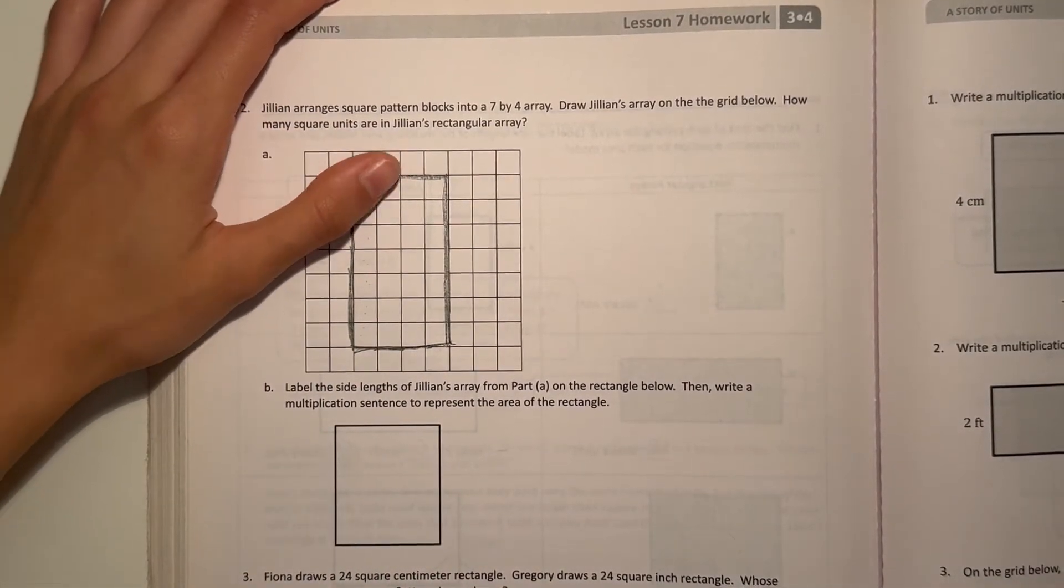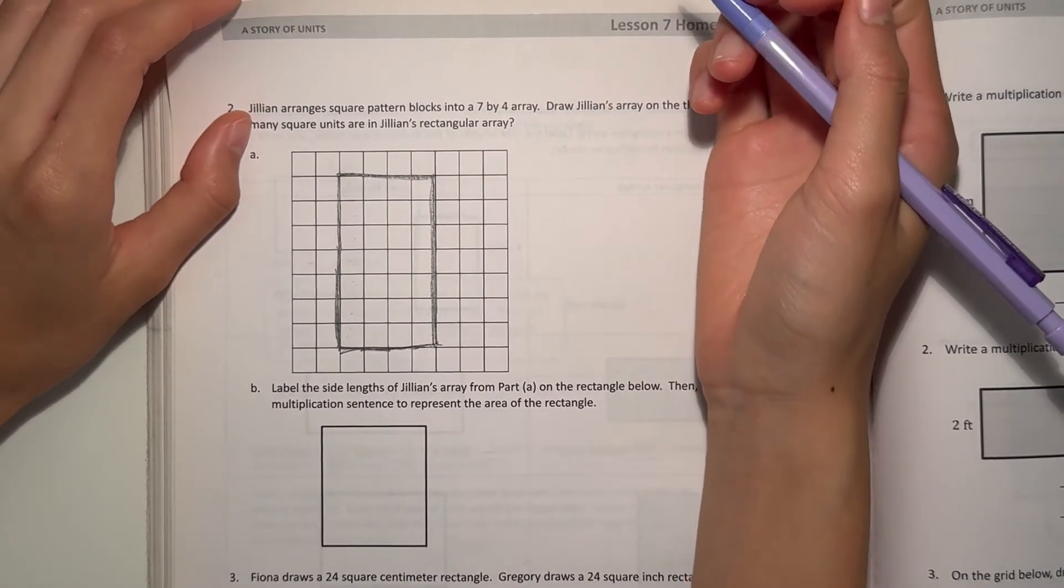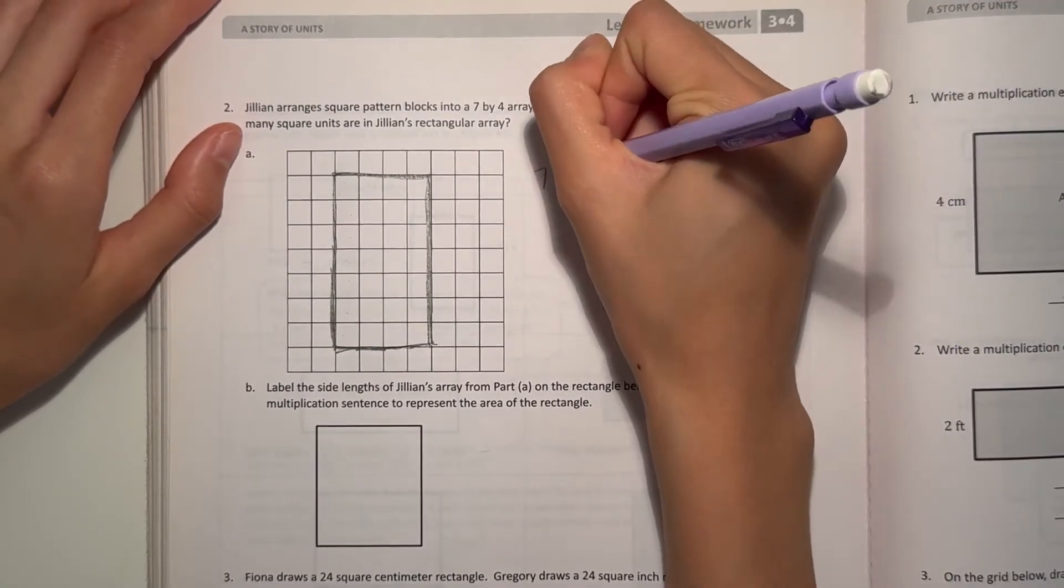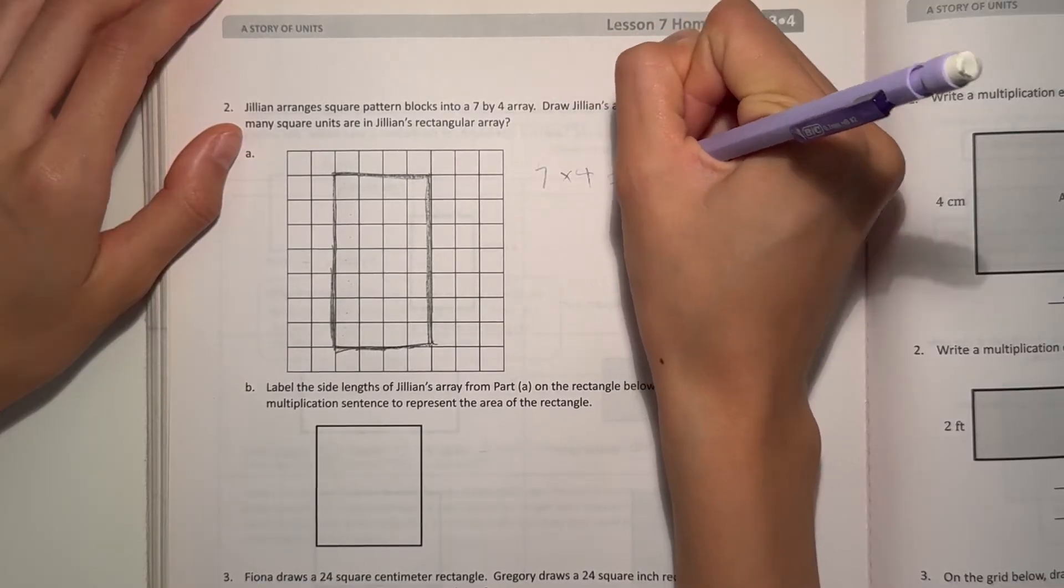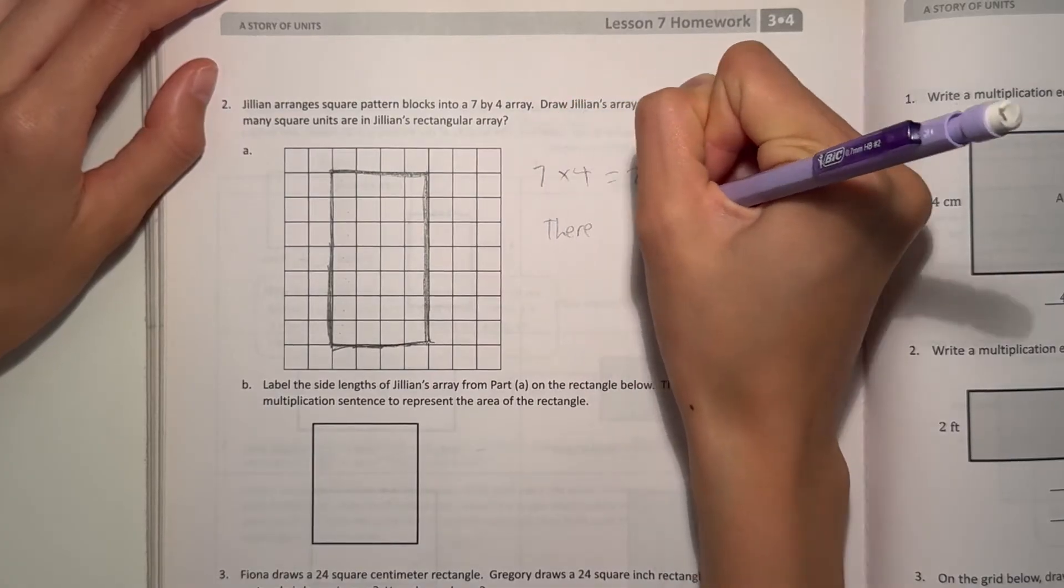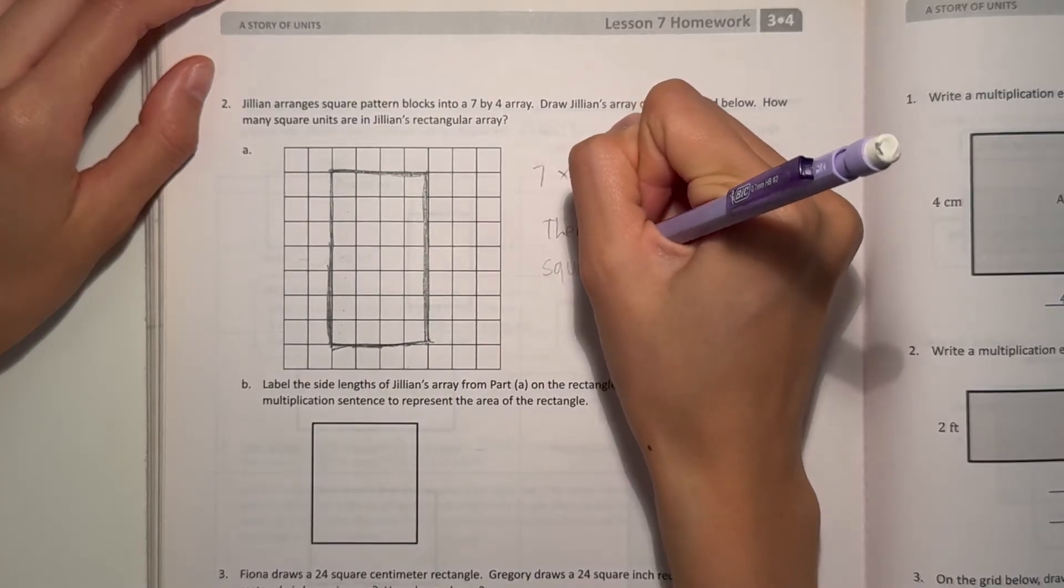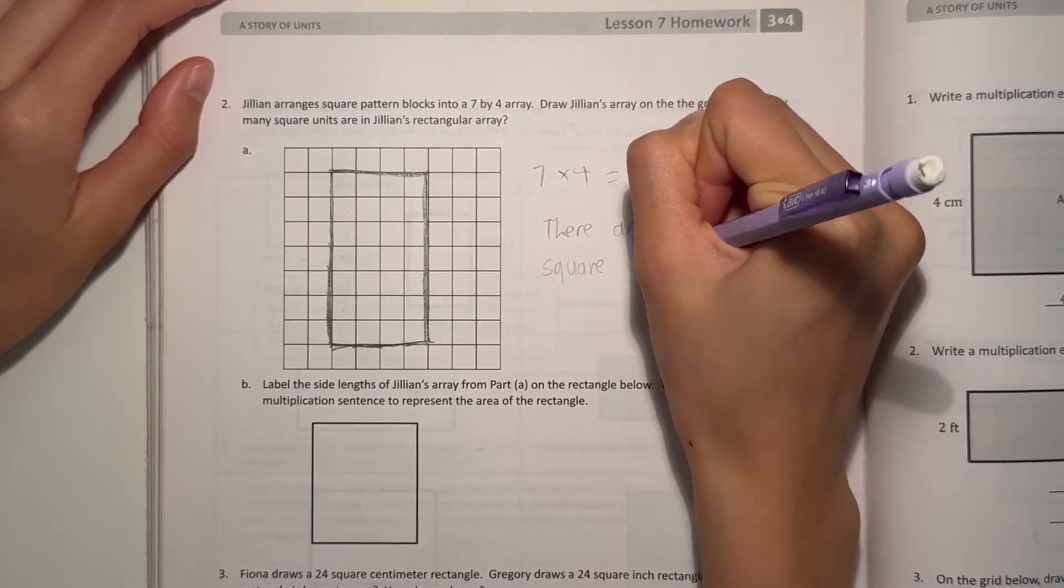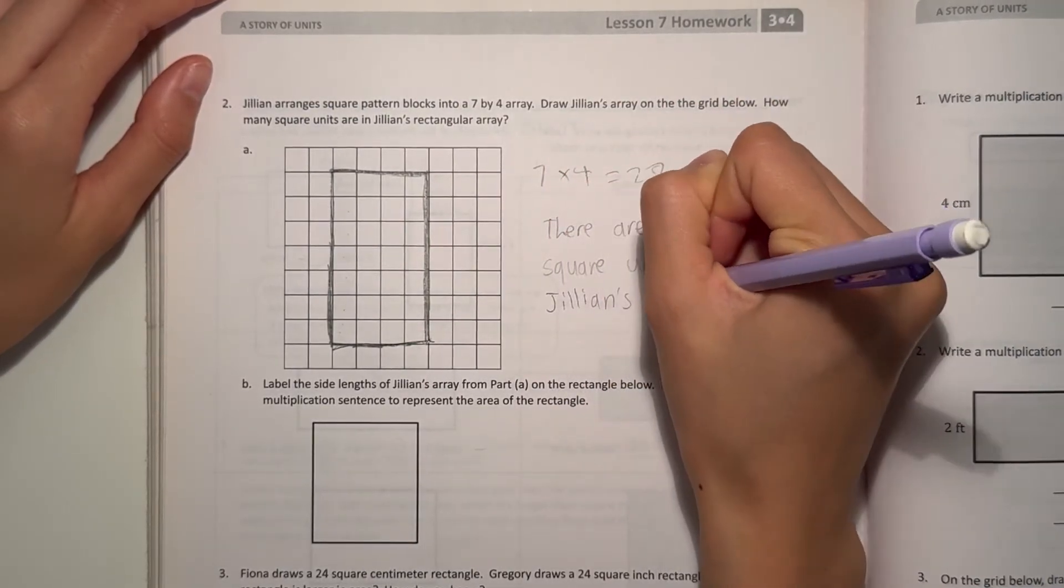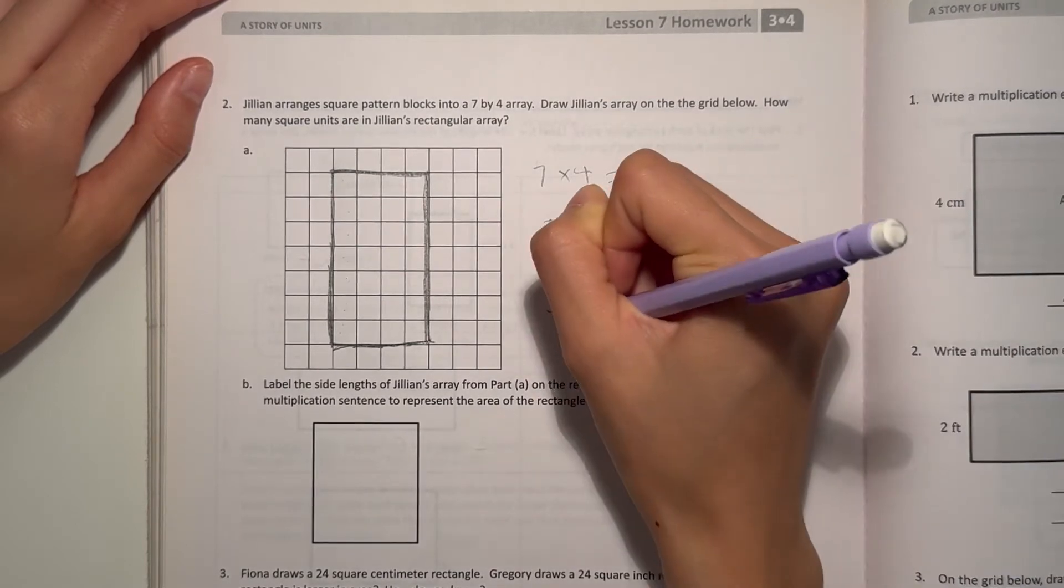So this is Jillian's array. It's a 7 by 4 rectangle. So we want to find out how many square units are in the array. Basically, what's the area? 7 units times 4 units equals 28. Which means the area is 28. So there are 28 square units in Jillian's rectangular array.